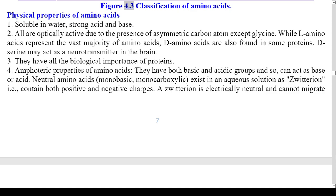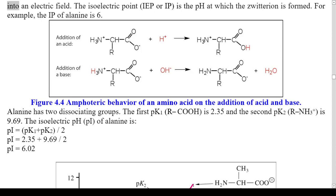Figure 4.3: Classification of Amino Acids. Physical Properties of Amino Acids: 1. Soluble in water, strong acid, and base. 2. All are optically active due to the presence of an asymmetric carbon atom, except glycine. While L-amino acids represent the vast majority, D-amino acids are also found in some proteins; D-serine may act as a neurotransmitter in the brain. 3. They have all the biological importance of proteins. 4. Amphoteric properties: amino acids have both basic and acidic groups and can act as base or acid. Neutral amino acids exist in aqueous solution as zwitterions, containing both positive and negative charges. A zwitterion is electrically neutral and cannot migrate in an electric field. The isoelectric point (pI) is the pH at which the zwitterion is formed; for example, the pI of alanine is 6.